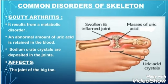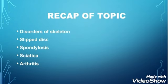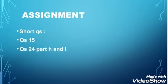That is the end of today's lesson. In recap, what we have discussed is disorders of skeleton: number one, slip disc also known as herniated disc; number two, spondylosis; number three, sciatica; and number four, arthritis — with three types: osteoarthritis, rheumatoid arthritis, and gouty arthritis. You have to complete short question number 15 and parts H and I of question number 24 on loose sheets, and you have to learn the entire topic covered in this lecture.